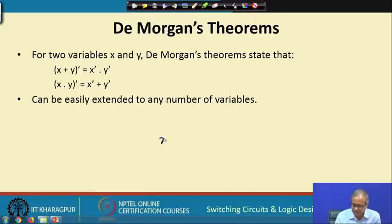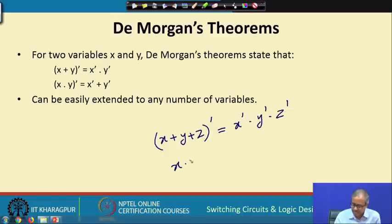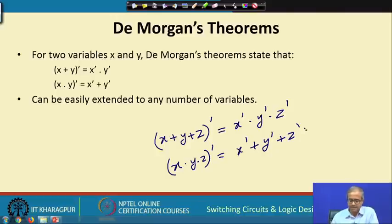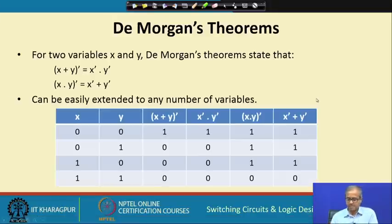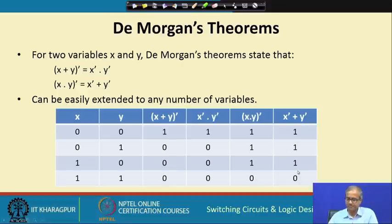De Morgan's theorem can be extended to any number of variables. For three variables: NOT(x + y + z) = x̄ · ȳ · z̄, and NOT(x·y·z) = x̄ + ȳ + z̄. The truth table confirms this — for all possible values of x and y, the left hand side and right hand side columns are identical for both forms of the theorem.